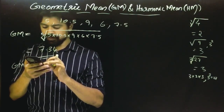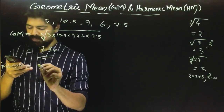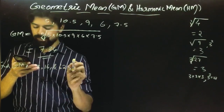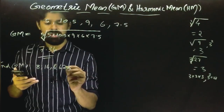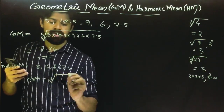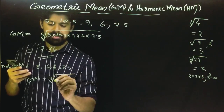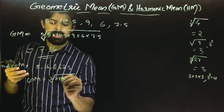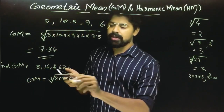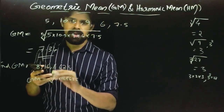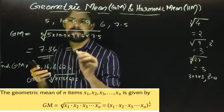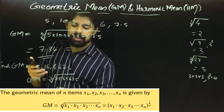Here is another example of GM. Find the GM of 8, 16, and 62.5. Since there are 3 numbers, we take the cubic root of their product: the cubic root of (8 × 16 × 62.5). You can calculate this using a scientific calculator in your exam. The result is equal to 20.